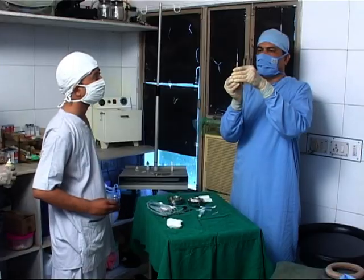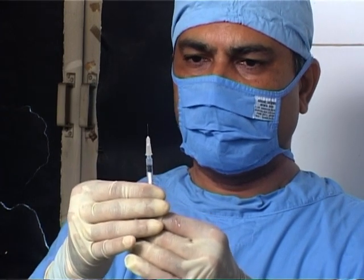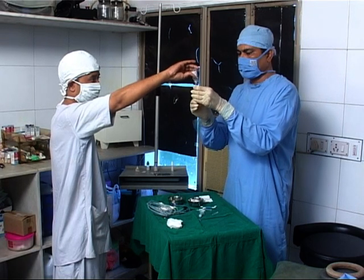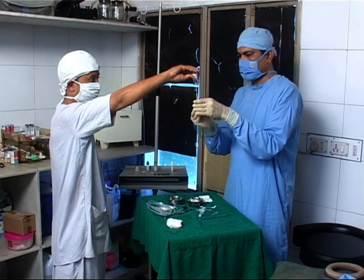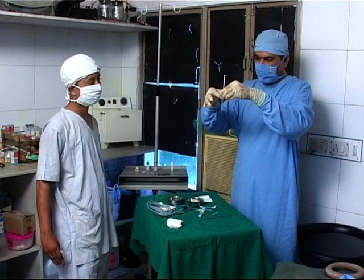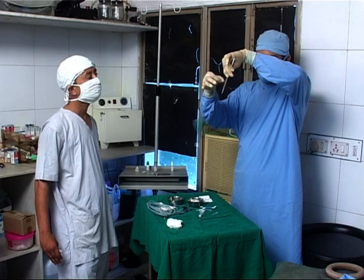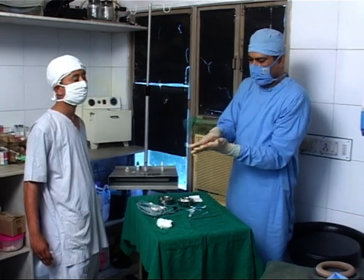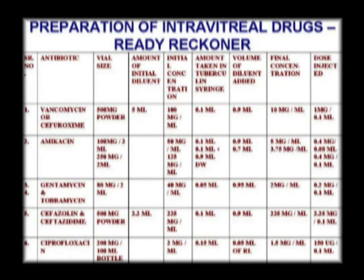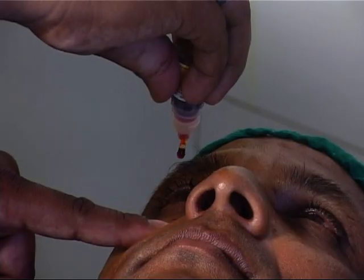Use 26, 27, or 30 gauge needles — use the finest gauge available, though gauge becomes immaterial if the same sclerotomy is used as the one for the tap. If you want to inject 0.1 ml, take 0.2 ml of the drug to be injected. The method of dilution of different drugs is shown in the table.